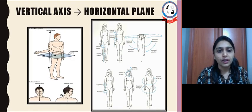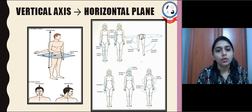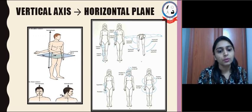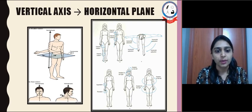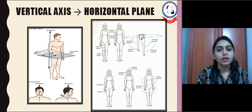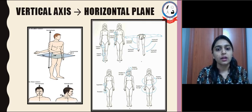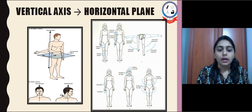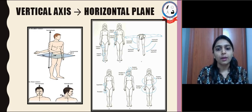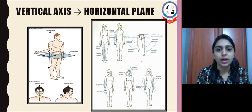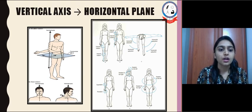The examples for the vertical axis are rotatory movements. All rotatory movements occur around the vertical axis in the horizontal plane — like shoulder internal and external rotation, hip internal and external rotation, supination and pronation at the radioulnar joint, cervical and lumbar rotation, and horizontal adduction at the hip and shoulder joint.